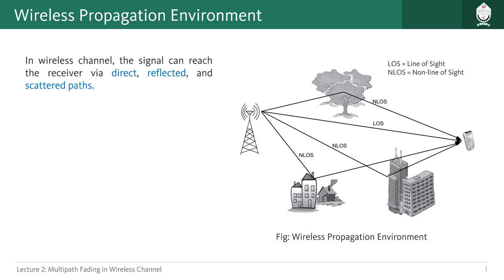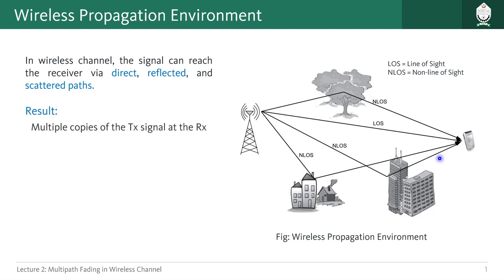First of all let us understand how wireless propagation environment behaves. When a signal is transmitted from our transmitter, it can be received in a direct path to our receiver, which is called the LOS or line of sight path. But in addition to that, this signal can also be received via reflected or scattered paths, because of the design of our antenna. So when a signal is transmitted it spreads out in different directions, and as a result some portions of the signals get reflected by trees or buildings. So at the receiver we have multiple copies of our transmitted signal.